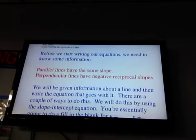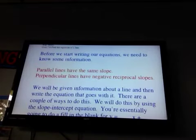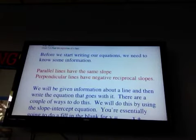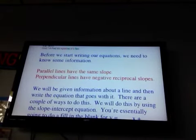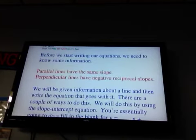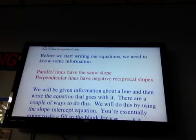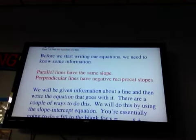So our answers are all going to be y equals something x something. So every answer is going to look like that. So your job is going to be able to find the two missing pieces, the m and the b, the slope and the y-intercept.